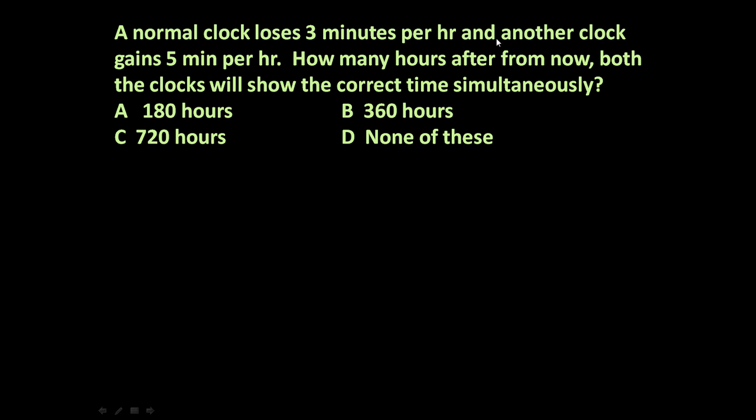A normal clock loses three minutes per hour and another clock gains five minutes per hour. How many hours from now will both clocks show the correct time simultaneously? Four options are given: 180 hours, 360 hours, 720 hours, and none of these.